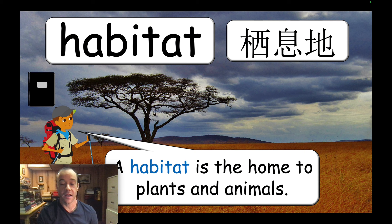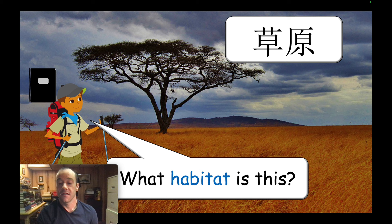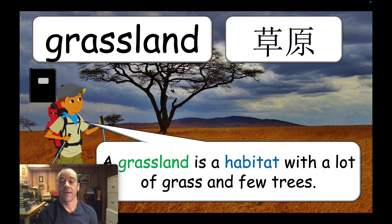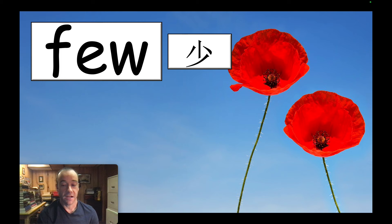You can have the class read the definition together. For each habitat, I ask 'what habitat is this?' and see if they know before presenting it. Some students may know it, so ask them first. If no one knows, you can show it. The answer is 'grassland' — they should write it down. The definition: a grassland is a habitat with a lot of grass and few trees. There may be a few words in each sentence they don't know; in this case it's the word 'few,' which you can have them write and then show an example sentence.